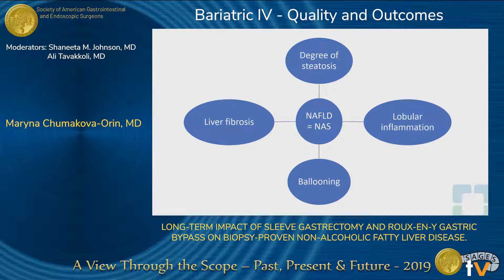The severity of NAFLD is measured using the NAFLD activity score, which encompasses liver fibrosis, degree of steatosis, lobular inflammation, as well as presence of hepatocyte ballooning. A score greater than or equal to 5 is correlated with presence of NASH. In addition, liver parenchymal enzymes may correlate with the degree of severity of NAFLD, and liver function tests, mainly ALT and AST, do correlate directly with the degree of steatosis.